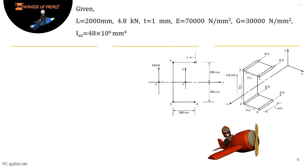Let's write the given data as: Length L = 2000 mm, Shear load P = 4.8 kN, Actual skin thickness t = 1 mm, Young's modulus E = 70,000 N/mm², Shear modulus G = 30,000 N/mm², and moment of inertia Iₓₓ = 48×10⁶ mm⁴.